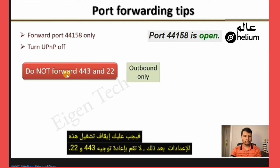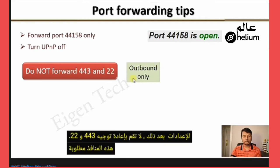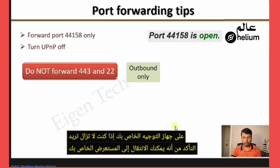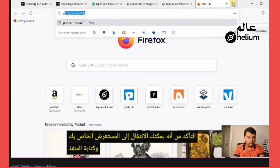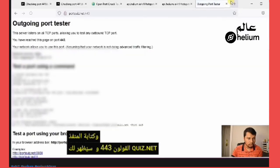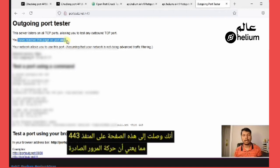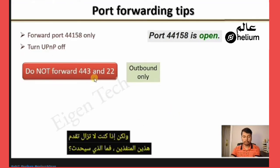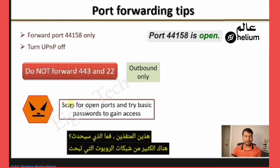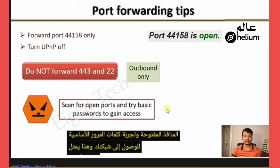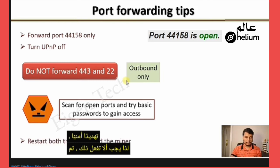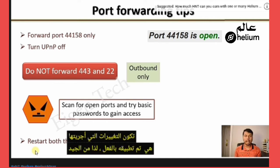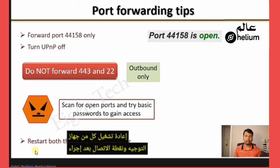Do not port forward ports 443 and 22. These ports are required for outbound traffic only, and by default outbound traffic is always open through your router. If you want to verify, go to your browser and type portquiz.net:443 — it will confirm that outbound traffic is allowed. If you still port forward these two ports, botnets that scan for open ports could try basic passwords to gain access to your network, which is a security threat. Also, some routers require restarting for changes to apply, so restart both your router and hotspot after port forwarding.